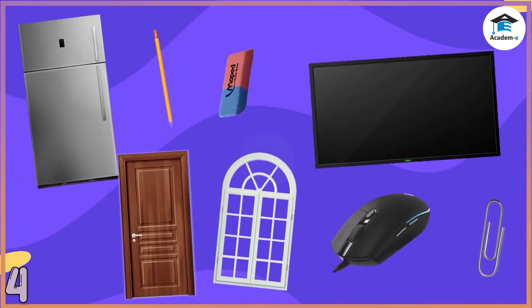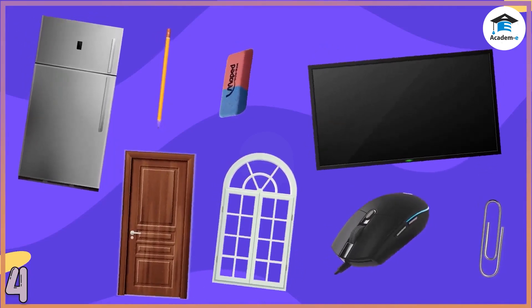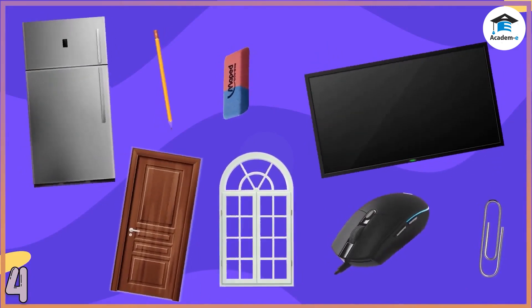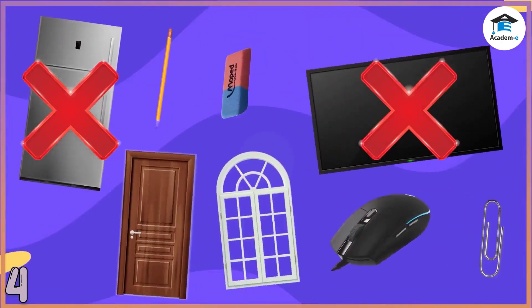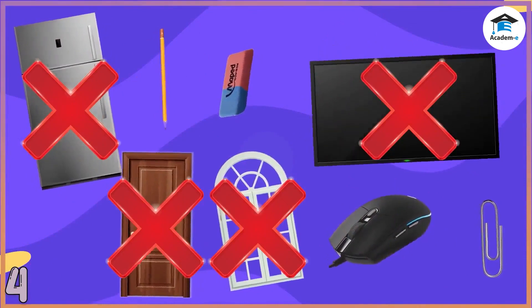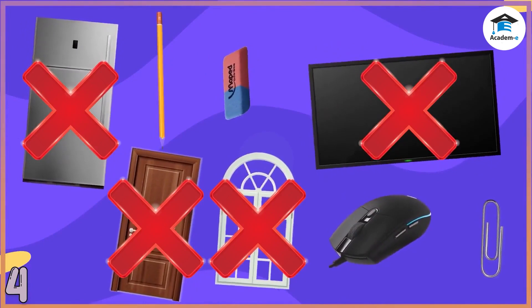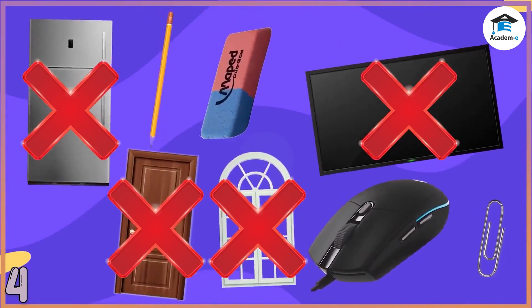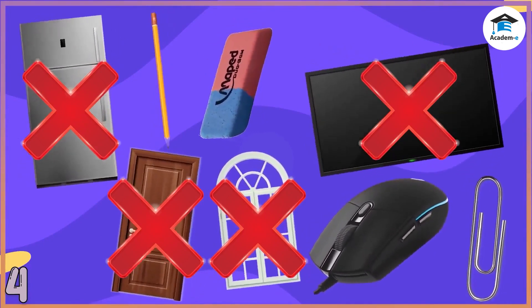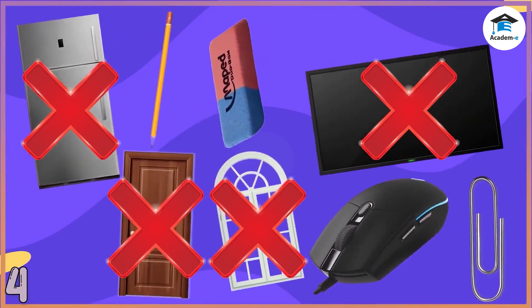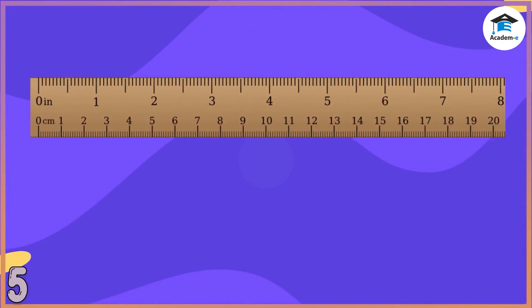Which of these objects are not usually measured in centimeters? Refrigerator, television, door, and window are not usually measured in centimeters. Pencil, eraser, mouse, and paper clip can be measured in centimeters because they are small objects. We can measure centimeters using a ruler.